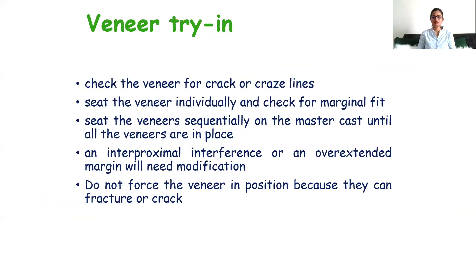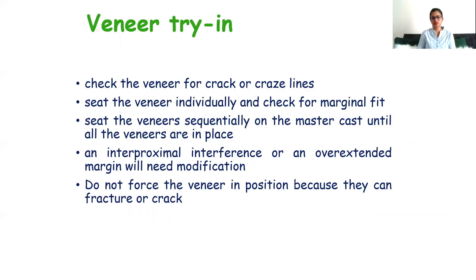After fabrication of the laminate, we do veneer drying. Check the veneer for crack or craze lines — if present, send it back to the lab to refabricate. If the laminate is good, sit the veneer individually and check the marginal fit, then sit the veneer sequentially on the master cast until all veneers are in place. If there is any interproximal interference or overextended margin, modification will be needed. Do not force the veneer into position as it can cause fracture.